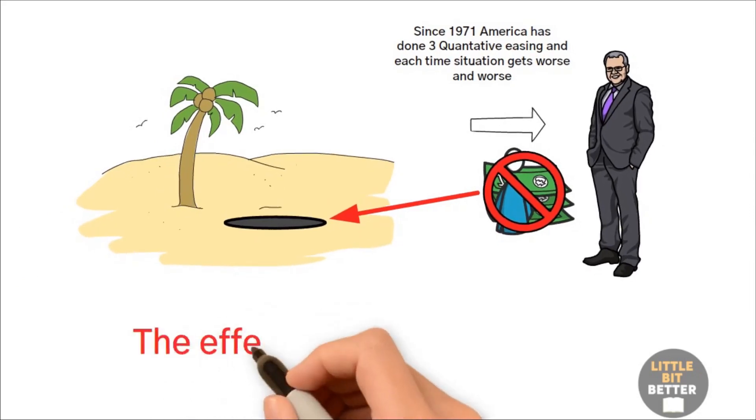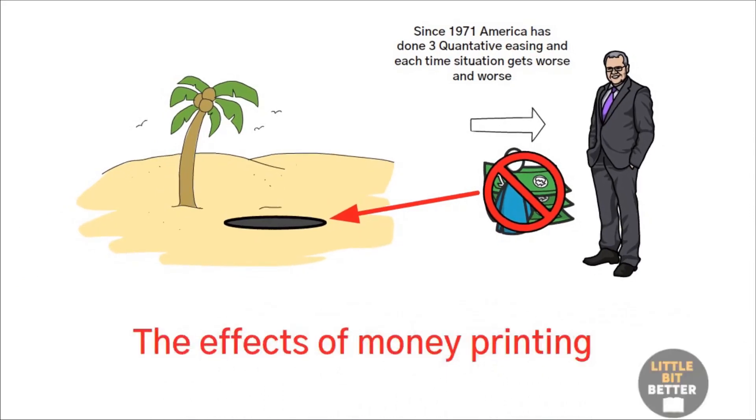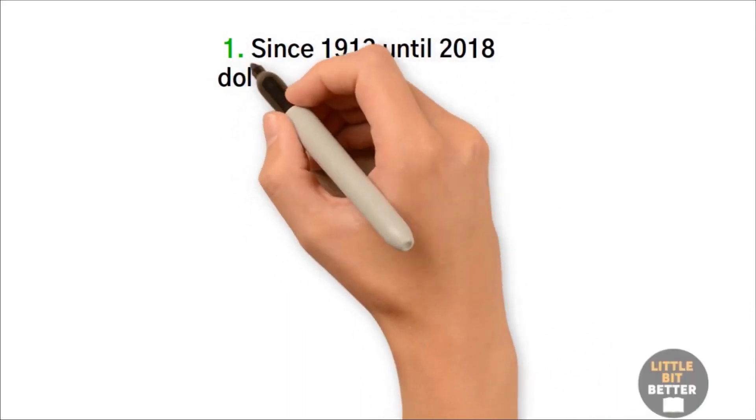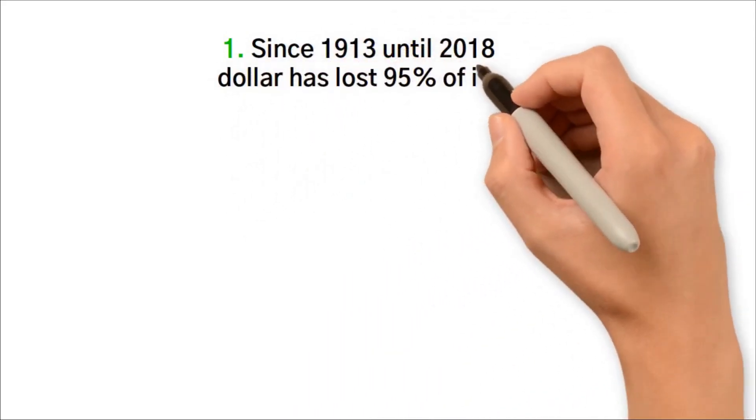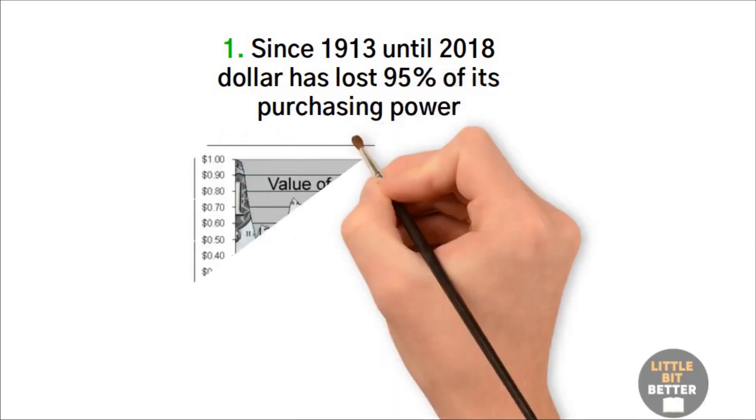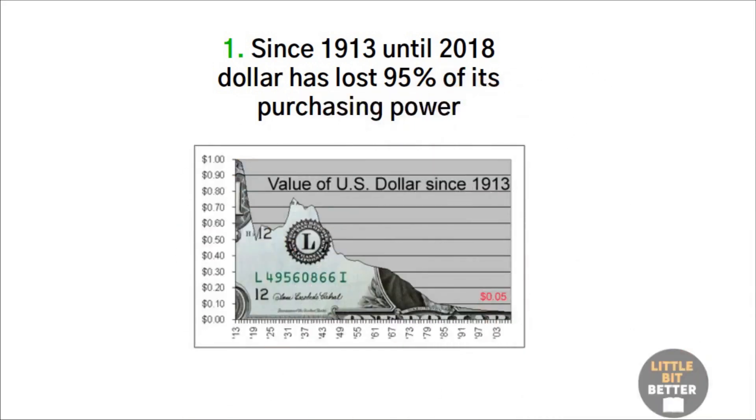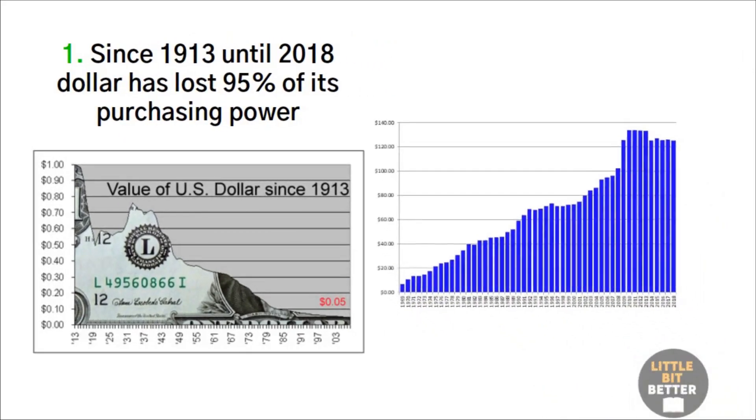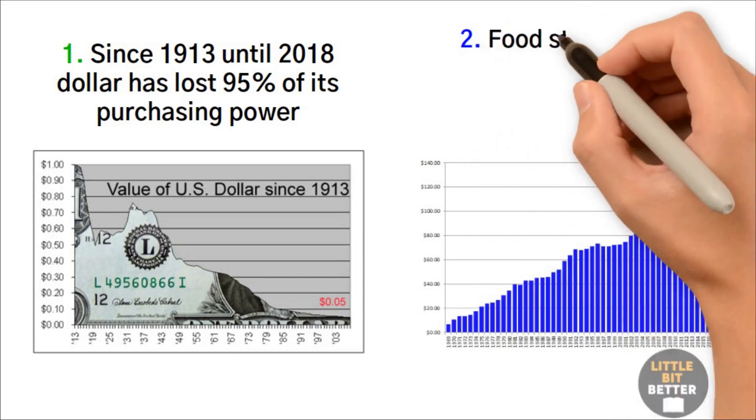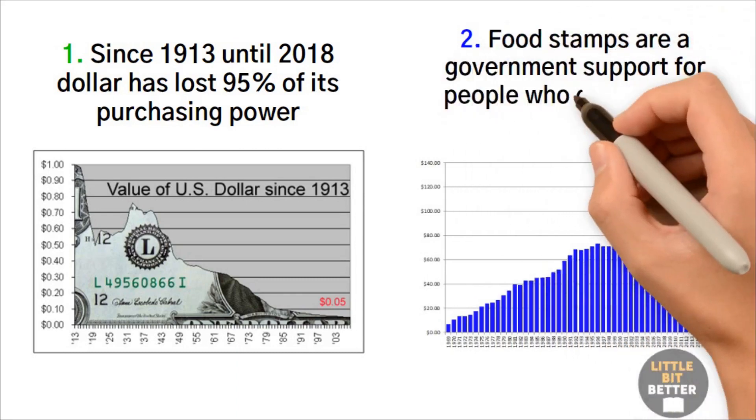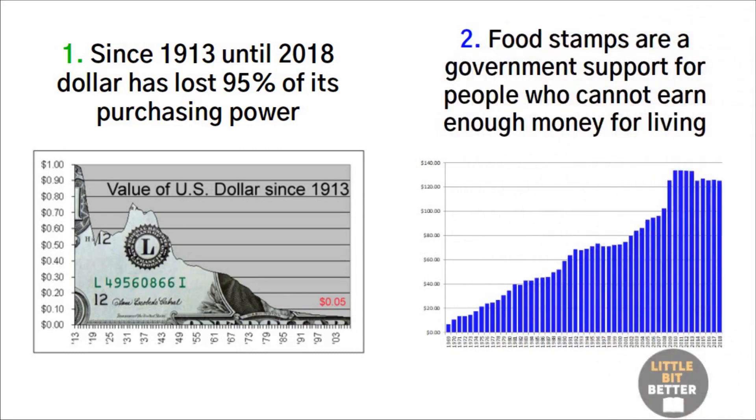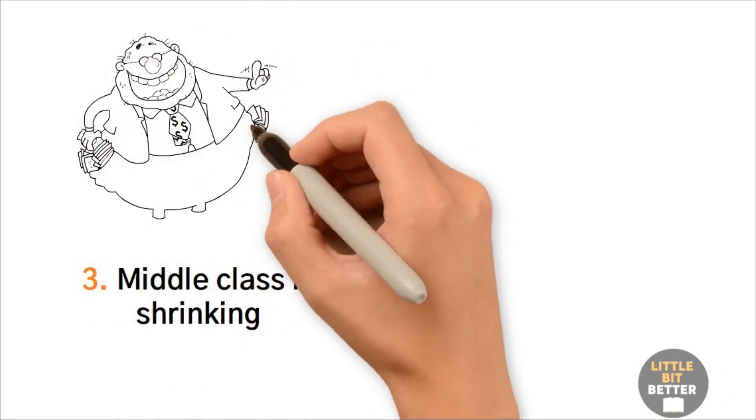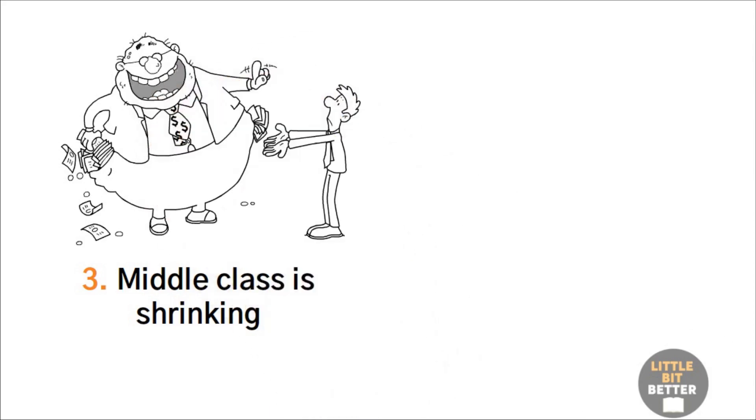If you want to see the effects of money printing, then look at the following factors. 1. Since 1913 until 2018, the dollar has lost 95% of its purchasing power. This makes life difficult for those who work for money. 2. The number of food stamps has reached a very high level. If you don't know, food stamps are a government support for people who cannot earn enough money for living. 3. The middle class is shrinking. The gap between rich and poor is very high. 4. Sizes or grams of products in the markets get smaller.